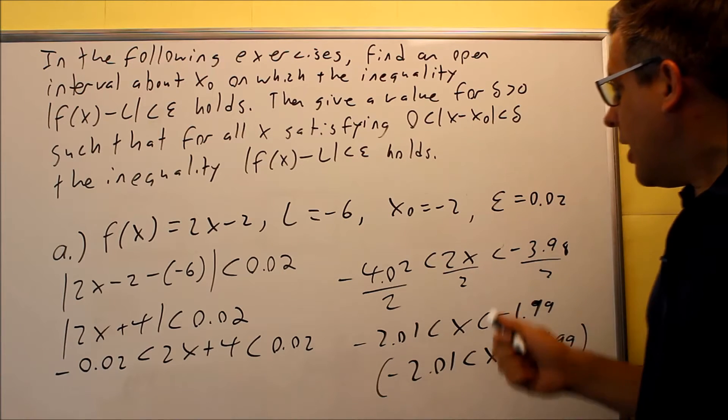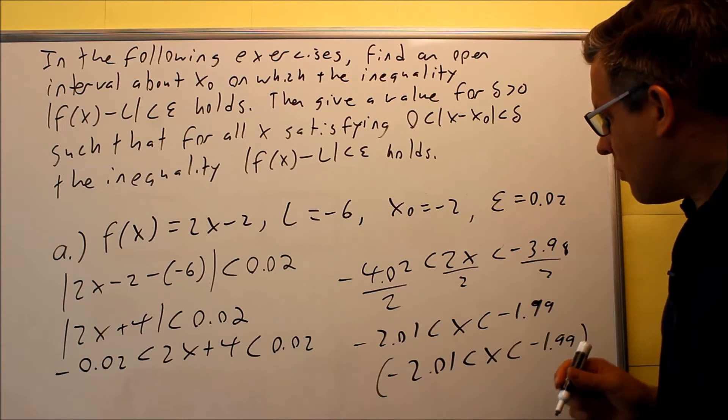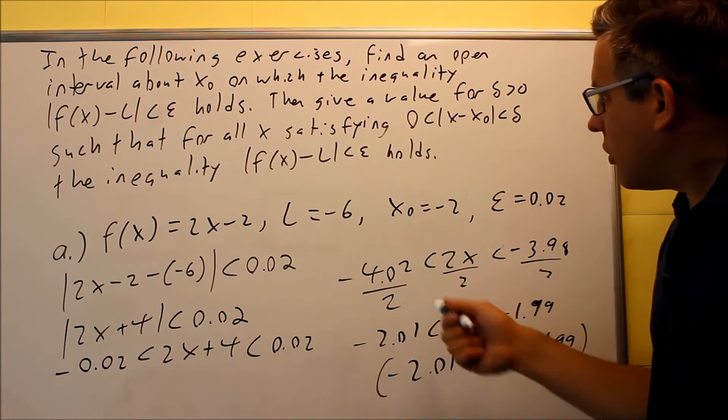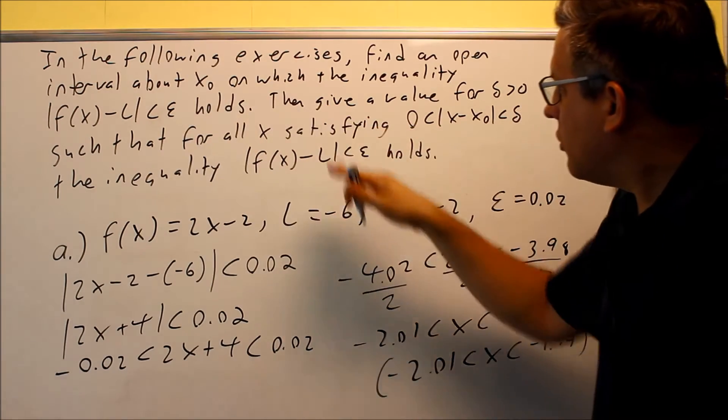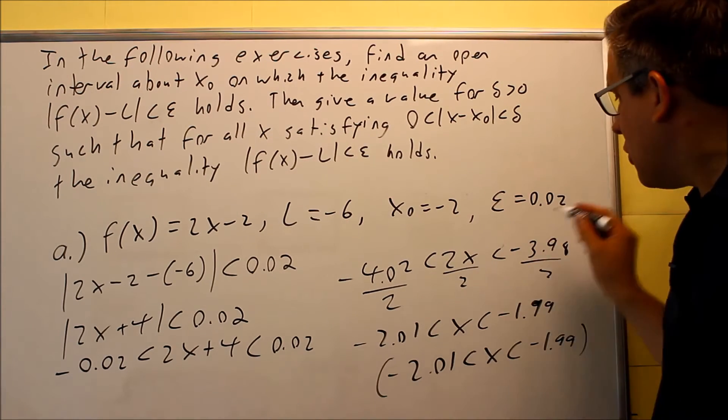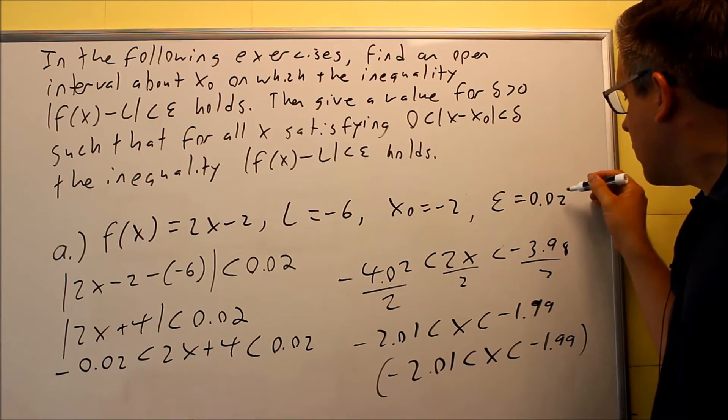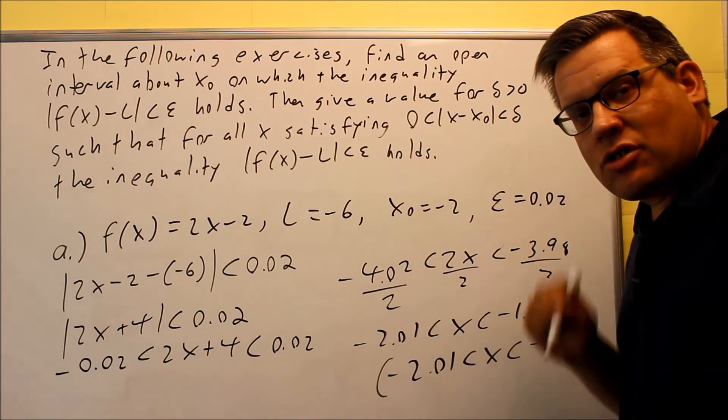So basically this is the amount of difference that we are in each direction. So this is the first interval that we have here, this interval about negative 2 on which the inequality holds. So basically, in order for this tolerance to be true here with an epsilon of 0.02, this is how far off we have to be in the x direction.